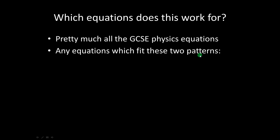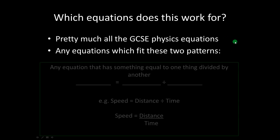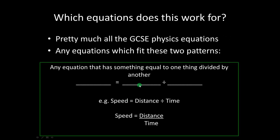Basically it works for any equations which fit two particular patterns. The first is when you've got something equal to two things multiplied together — for example, energy equals power times time. The second form is anything where you have something equals one thing divided by another, written with a division sign or as one quantity over another. The classic example there is speed equals distance over time.